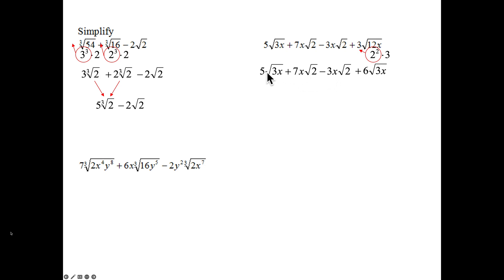Okay, identify like terms. Square root of 3x, square root of 3x. 5 plus 6, 11 square root of 3x. Here we have 7, then x square root of 2, and another x square root of 2. So 7 minus 3 is 4x square root of 2. So there it's simplified. Cannot combine these two together. They're not the same on the inside.